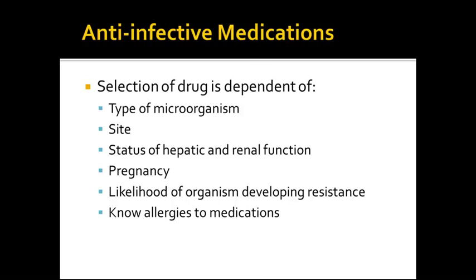Anti-infective medications. There are several different factors that play a part in which medication we prescribe for an infection. The selection of drug is dependent on the type of microorganism — is it gram-positive or gram-negative, bacteria or virus? The site matters: a UTI versus a respiratory infection would require completely different medications. The status of hepatic and renal function is important, as some anti-infective medications can be very harsh on the liver and kidneys.